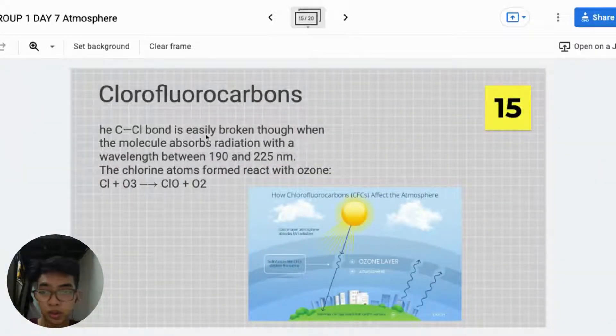Ozone is easily broken through photolysis when the molecule absorbs radiation with wavelength between 190 and 225 nm. The chlorine atoms react with the ozone.